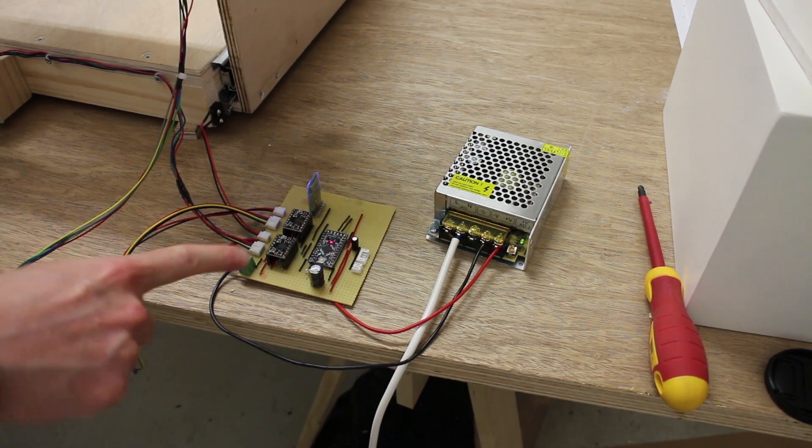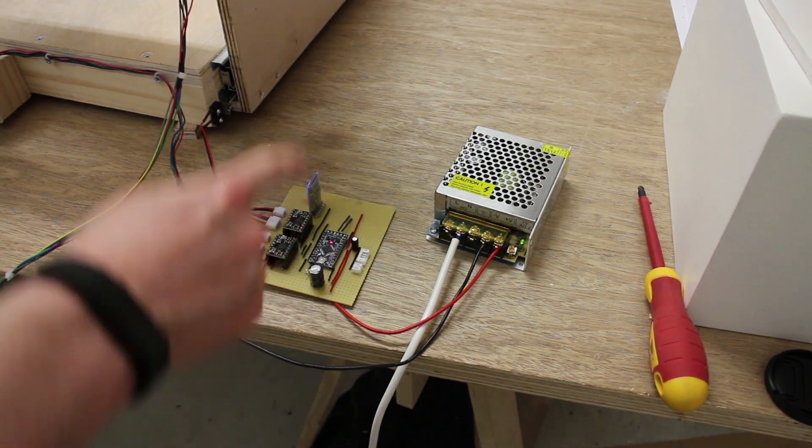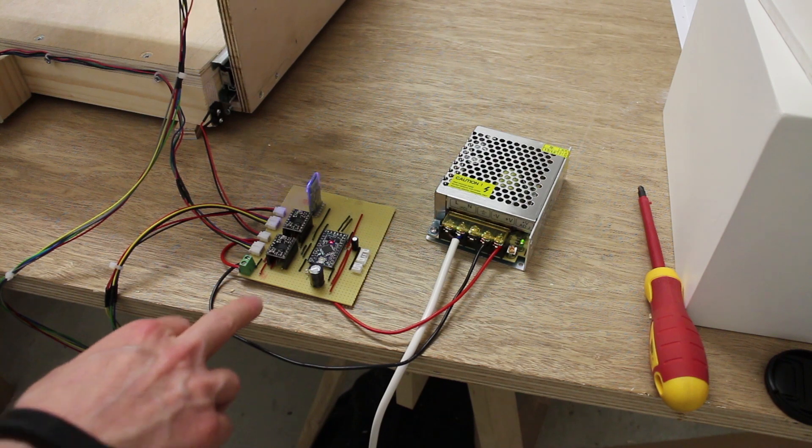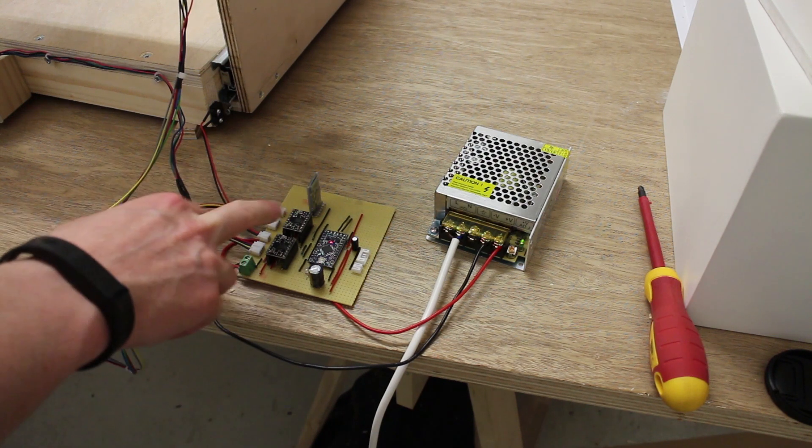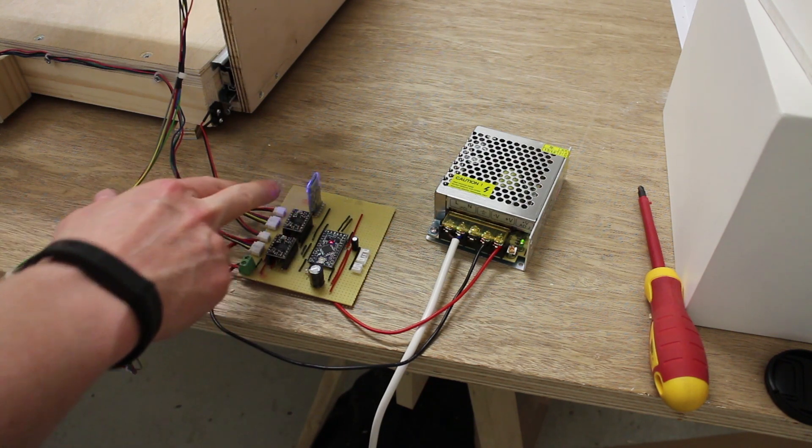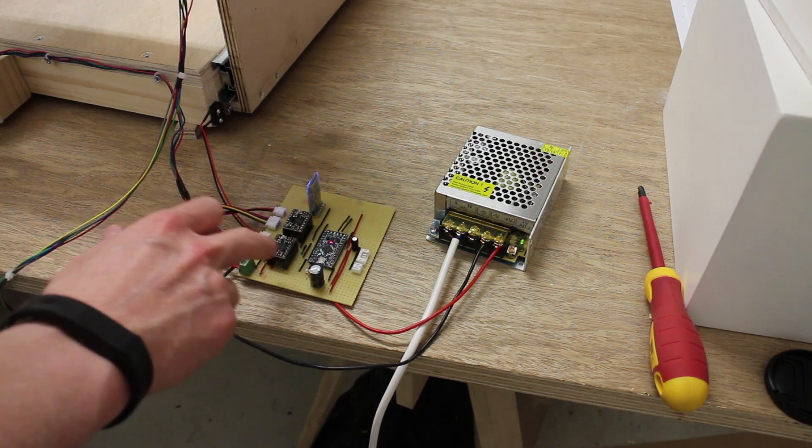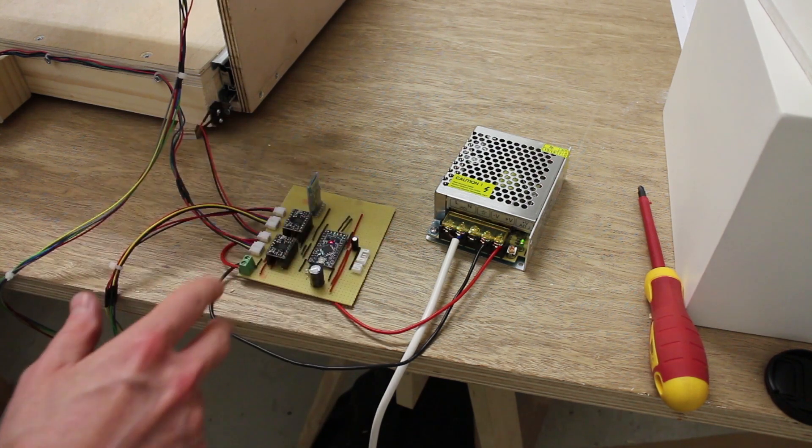This is the electronics board I've got it running from. It's the same circuit I made for the laser engraver board, so there's two Pololu stepper motor drivers on here, an Arduino Pro Mini, and just a few connectors.